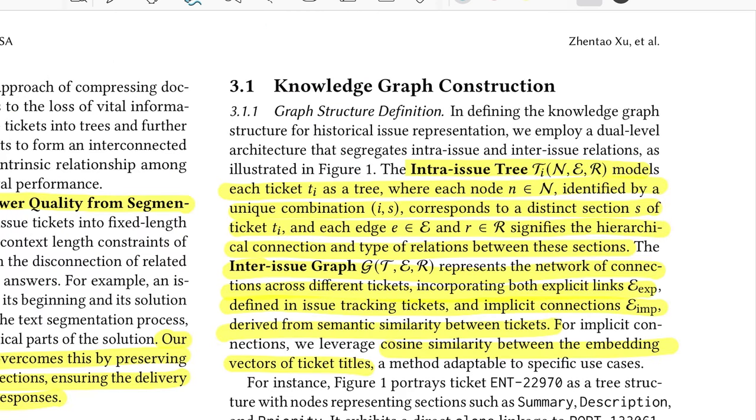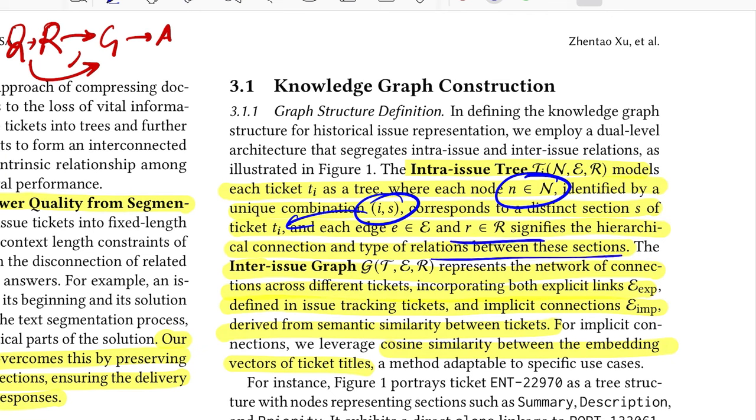Let's move forward and see what exactly are the relationships that they have considered and how they are constructed. For question answering, as we know, the first step is the retrieval where you get in the relevant context where you're kind of sure the answer may lie, and then is the generation piece that uses these retrieved contexts and gives out the final answer.